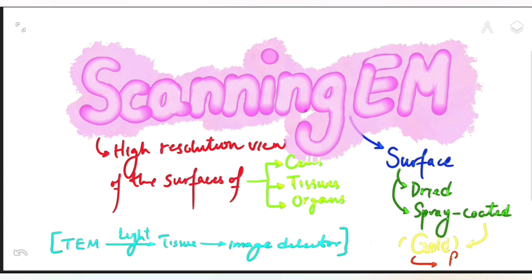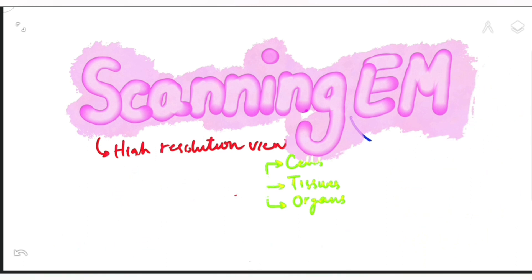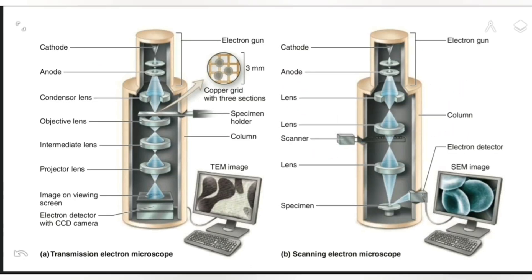So this heavy metal takes the light and reflects it back, doesn't let it be transmitted. Then this reflected light is taken by the detector, then it's translated into 3D form and can be viewed very easily and with a high resolution.